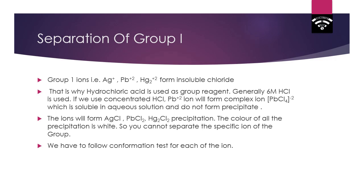All the precipitates—AgCl, PbCl₂, and Hg₂Cl₂—are of white color, and we cannot distinguish them from their color. So we have to do separate confirmatory tests for each of the ions.